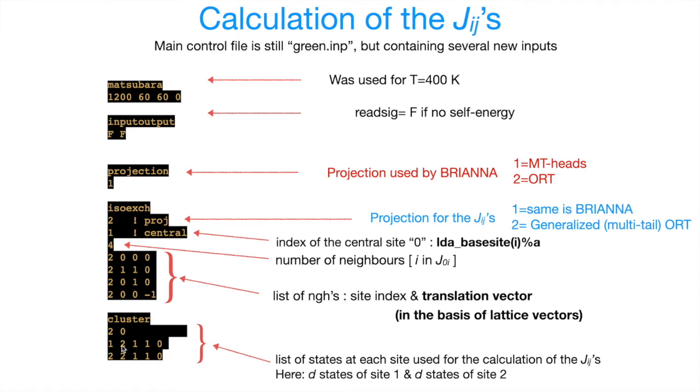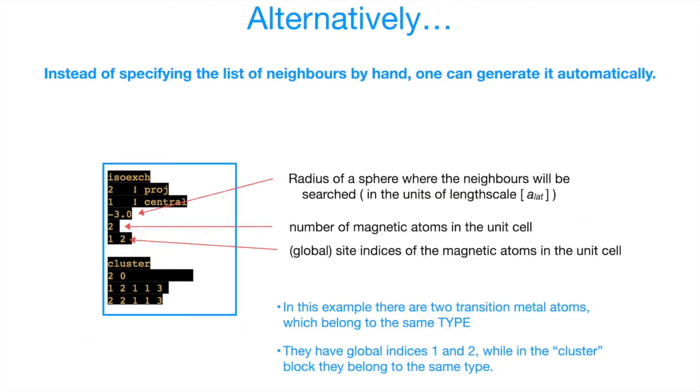Keep in mind that site index which you specify here is the global index of the atom as it appears in the data file, while here you have to see what type it belongs to. Alternatively, we can also generate the list of neighbors automatically. To enable this, we have to modify just a few lines here.